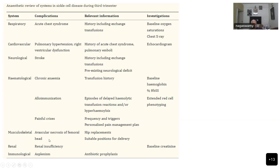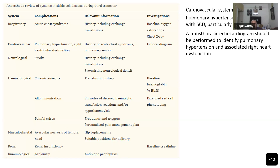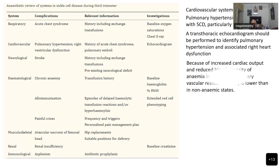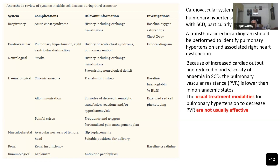Musculoskeletally, patients can have avascular necrosis of the femoral head, and there can be renal insufficiency. Immunologically, because of loss of splenic function, they are prone for infection, so antibiotic prophylaxis is a must. Regarding pulmonary hypertension in sickle cell, because of increased cardiac output and reduced blood viscosity, the pulmonary vascular resistance is actually lower than in non-anemic patients. So the usual treatment modalities like giving a pulmonary vasodilator will not be effective. The main idea is to prevent microthrombi and avoid occlusion.